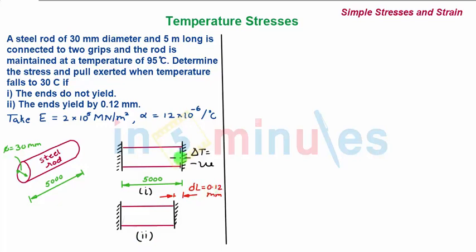As we know, due to cooling, when delta T is negative, the steel rod will try to contract and pull the yields towards it. So the resulting deformation is actually the contraction of the steel rod. Your delta L will actually be negative.